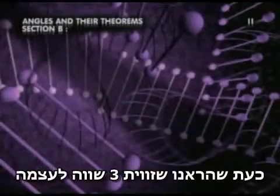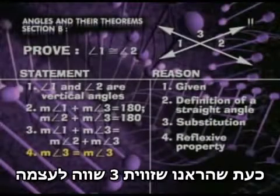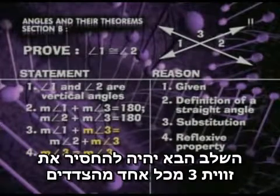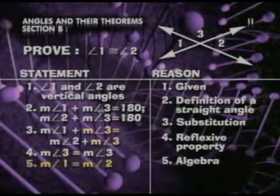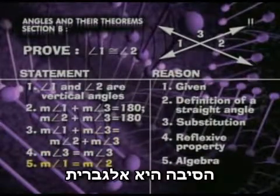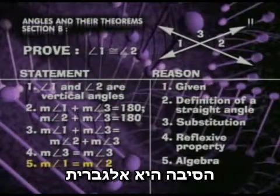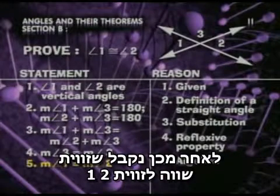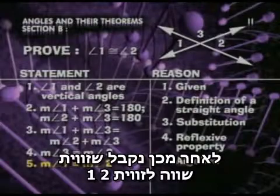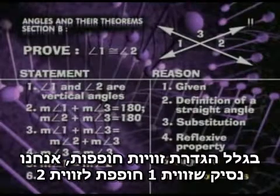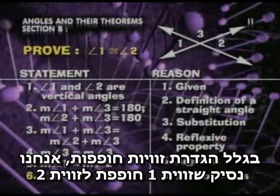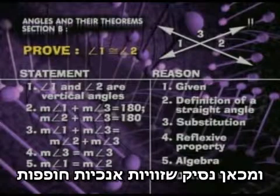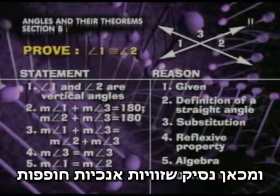Now that we've established that the measure of angle 3 is equal to itself, our next step is to subtract the measure of angle 3 from each side. Our reason here is just plain old everyday algebra. Once we do that, we're left with the measure of angle 1 equals the measure of angle 2. And because of the definition of congruent angles, we know angle 1 is congruent to angle 2. So we've proved the theorem that says vertical angles are congruent.